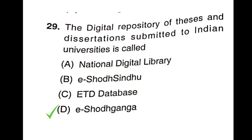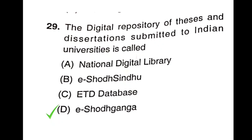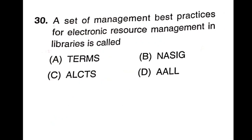Question 30: E-Shodh Ganga is the right answer. Question 31: TERMS — a set of management best practices for electronic resource management in life cycle — stands for Techniques for Electronic Resource Management. TERMS is the right answer, option A. How many terms are there? Six terms — option D is the right answer.